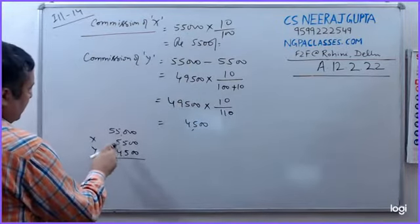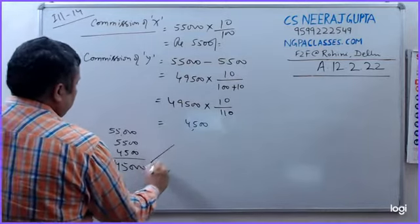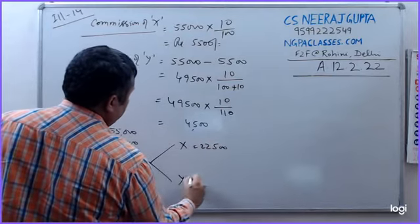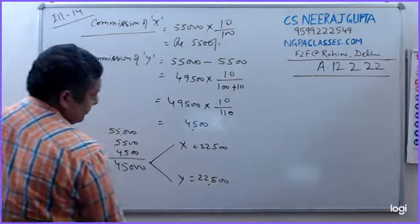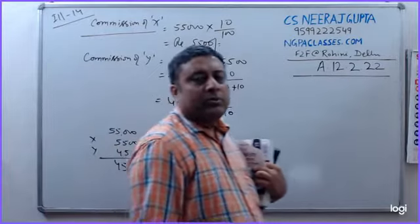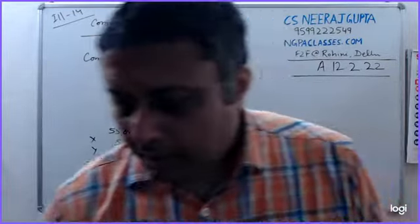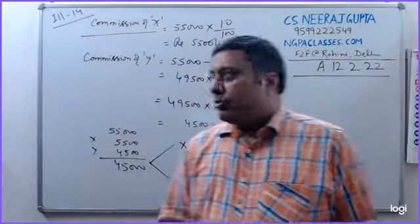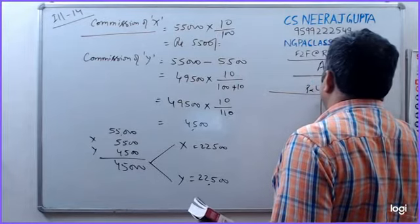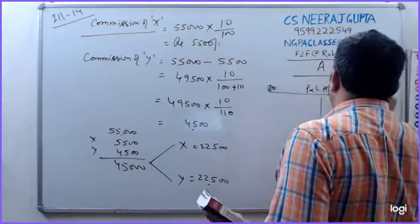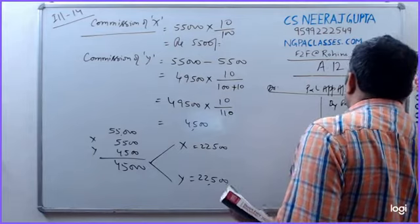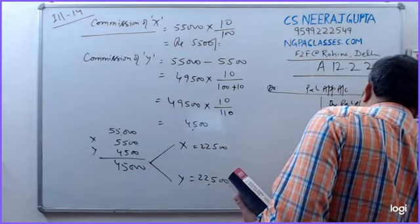So I am left with profit of 45,000. Now because the Profit Sharing Ratio is not given in the question, this will be equal - 22,500 and 22,500 each.